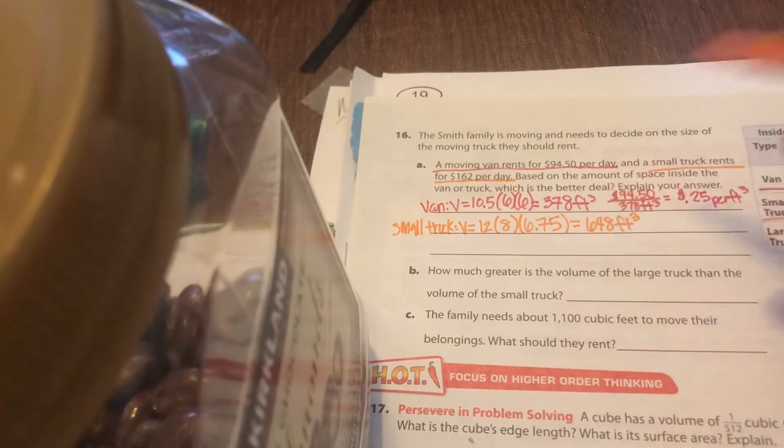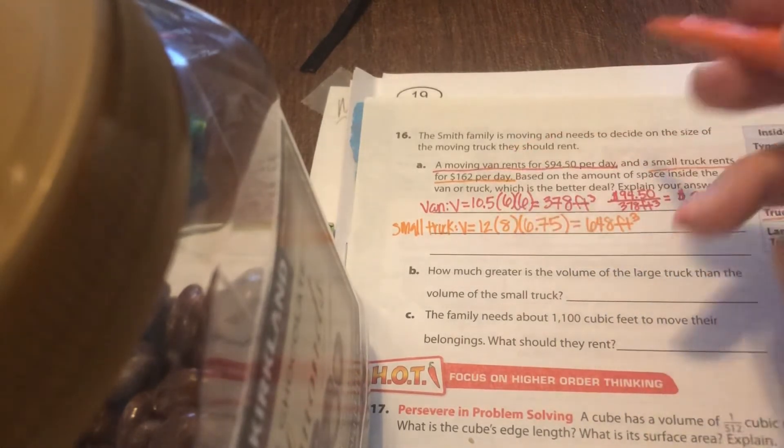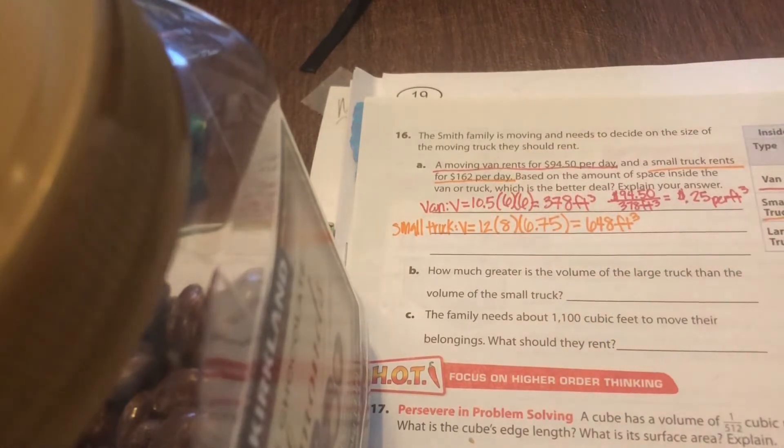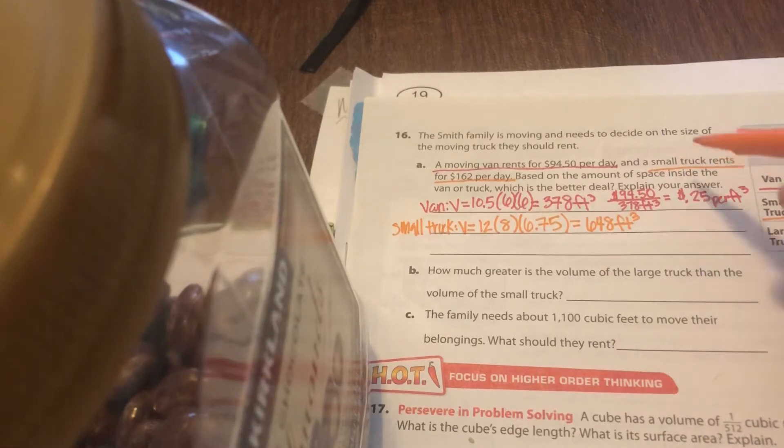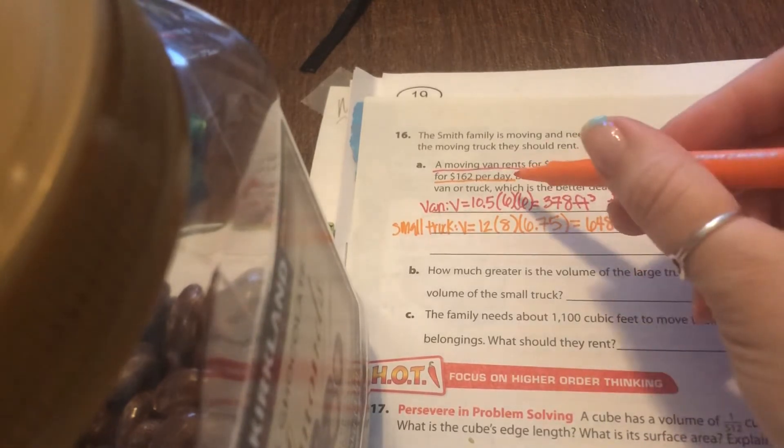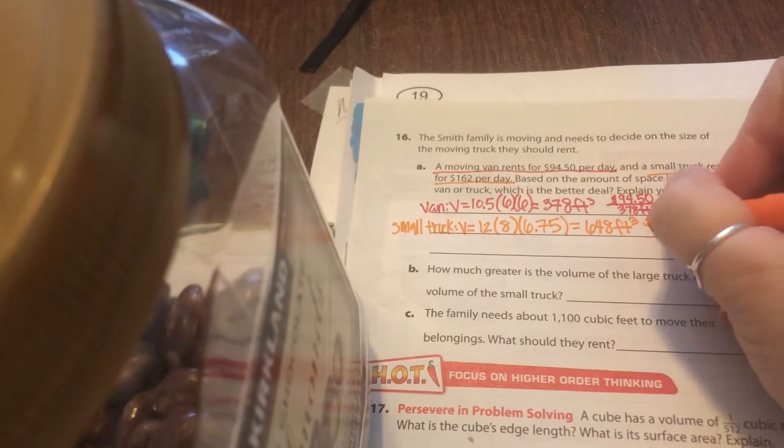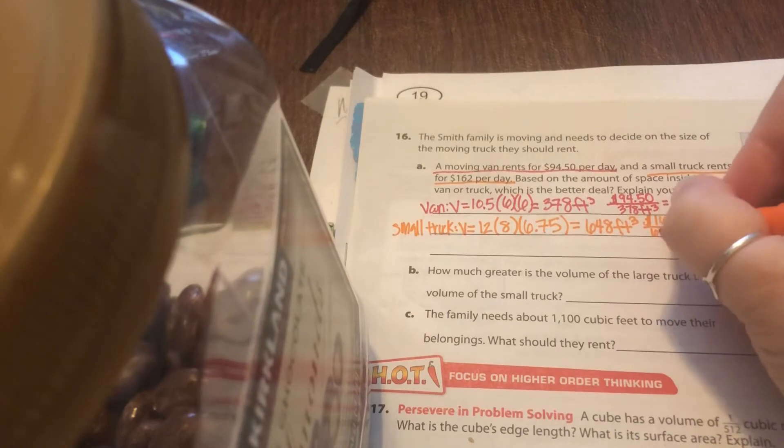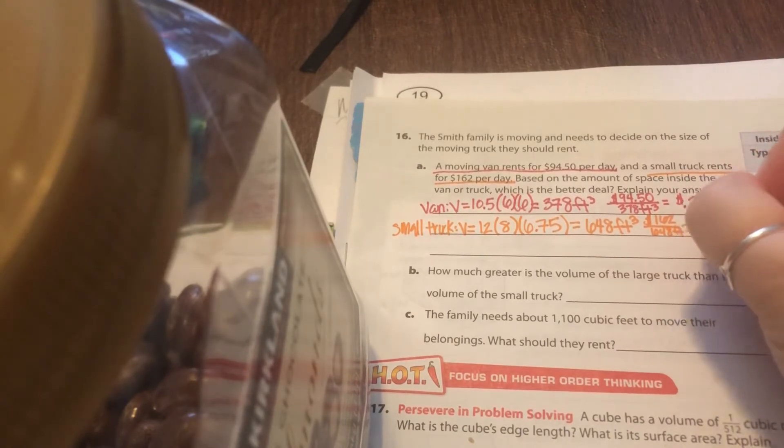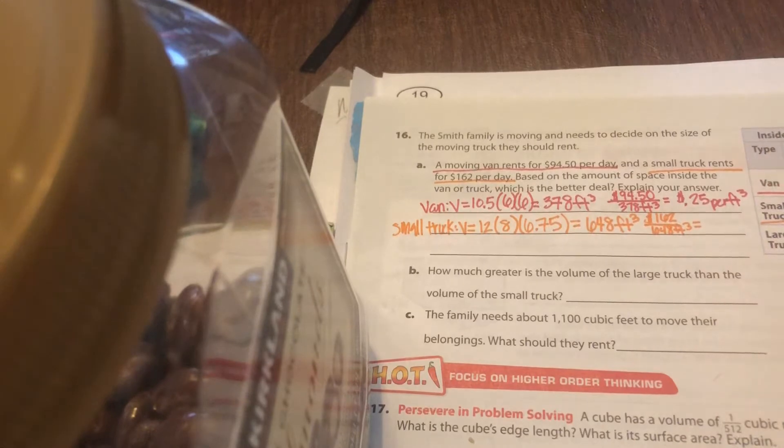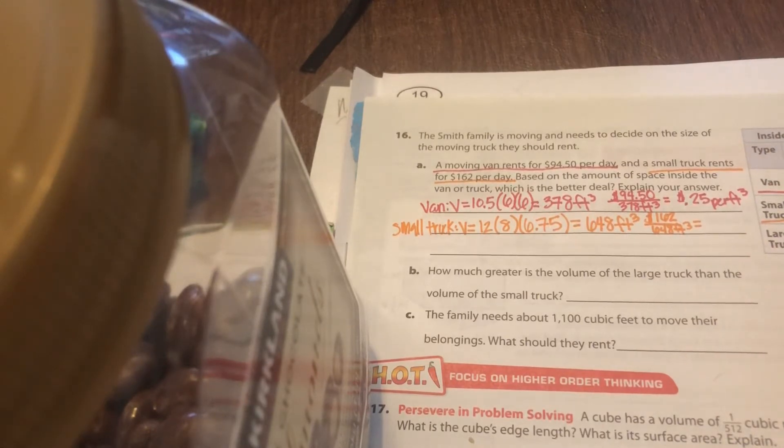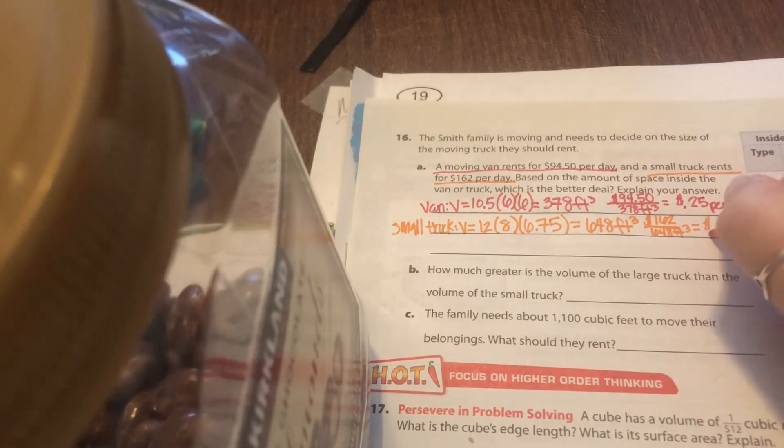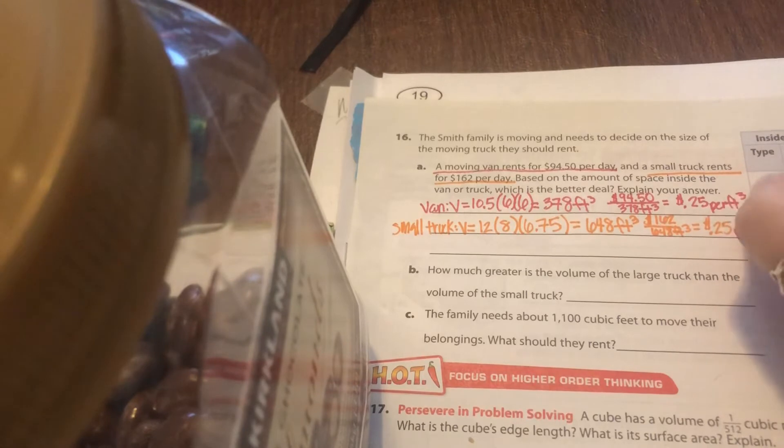And you can't just compare the volume. You need to know, well, how much does it cost? Because here's this and this. Yeah, this has more space, but it also costs more. So I want to, you have to find the volume and then also deal with the amount of space and how much it costs. So this one is $162. I'm going to divide that by 648 cubic feet, and then that will tell me how much it costs per cubic foot. And then I can compare, hey, who has the better deal? So when you type that into your calculator, 162 divided by 648, you get 0.25, which is 25 cents per cubic foot.